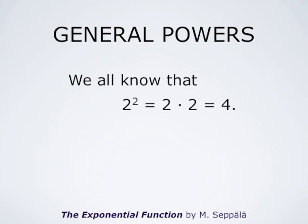2 to the power 2 is an abbreviation of 2 multiplied by itself — we all know that 2 to the power 2 is 2 times 2, which is 4. But what does 2 to the power pi mean? Pi is an irrational number. We cannot multiply 2 pi times with itself, because pi is not an integer.